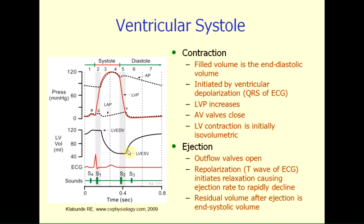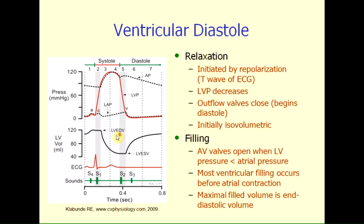The volume of blood that remains within the ventricle at the end of contraction and ejection is called the end-systolic volume, or LVESV — left ventricular end-systolic volume. The volume of blood that was in the ventricle prior to contraction and ejection is termed the left ventricular end-diastolic volume.